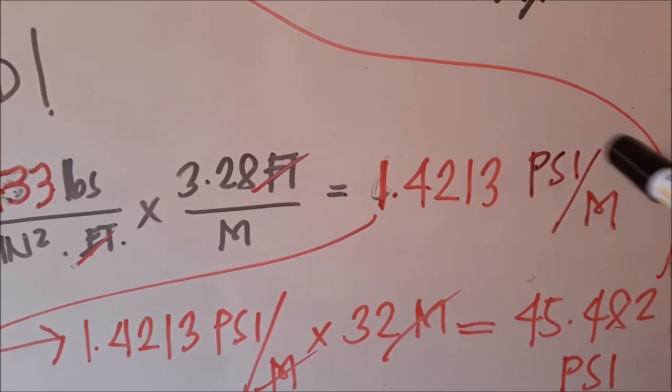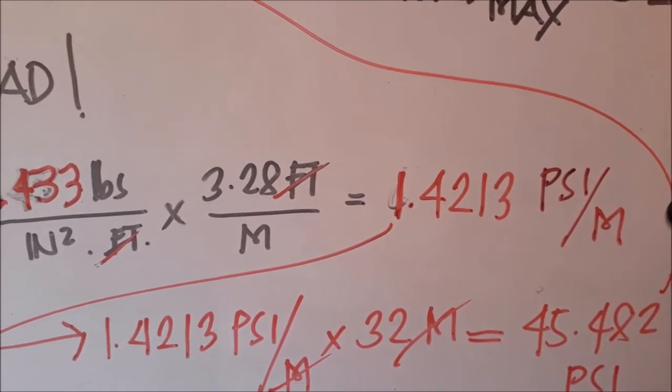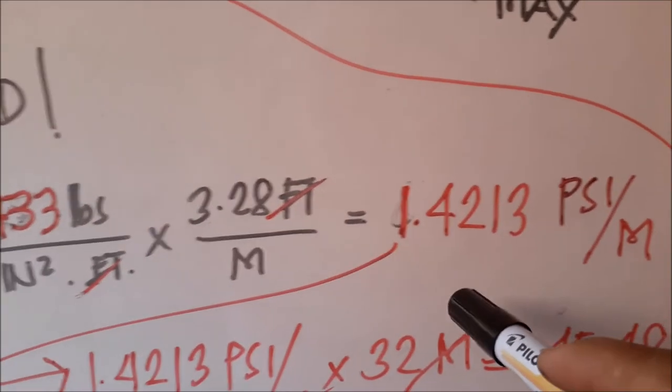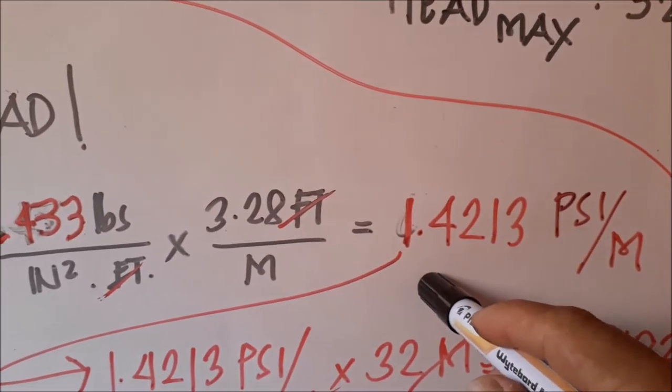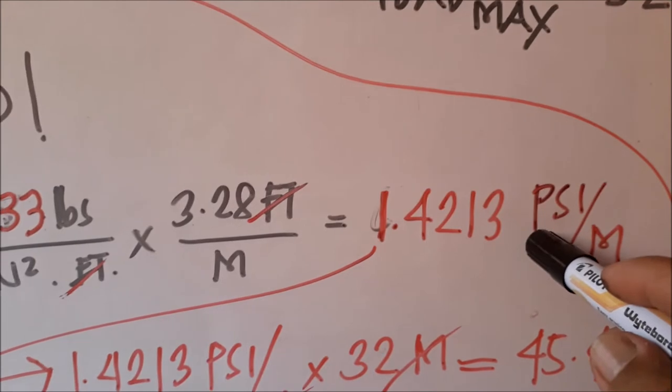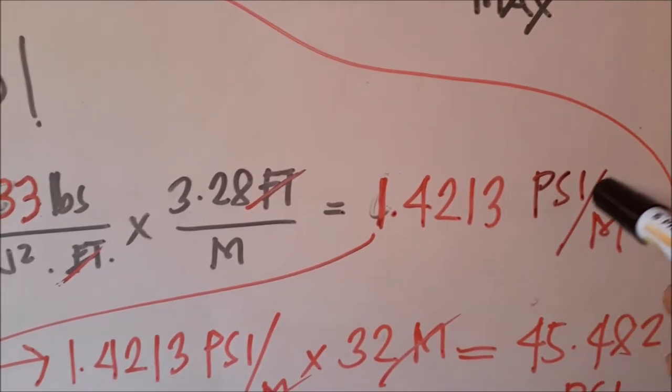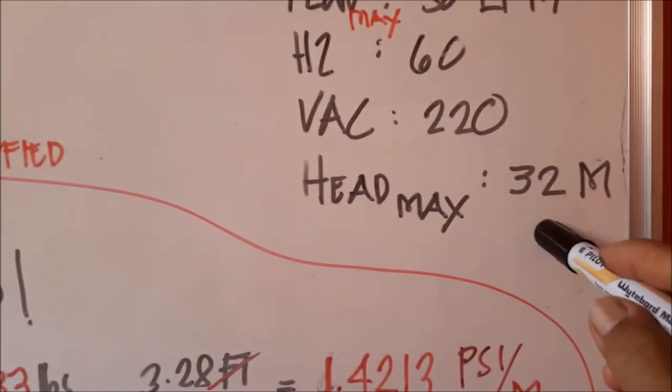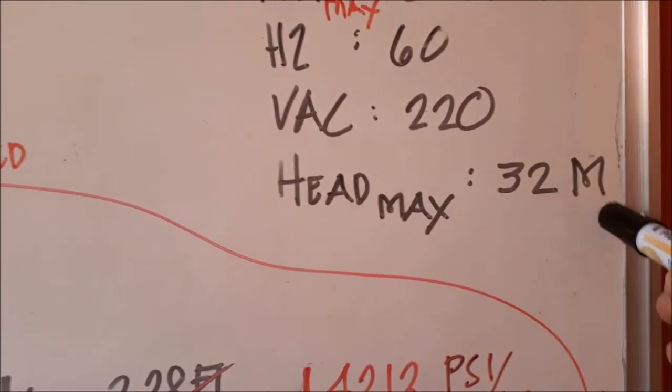This means at 1 meter height of water column, there will be pressure at the base of that column of 1.4213 pounds per square inch or PSI.